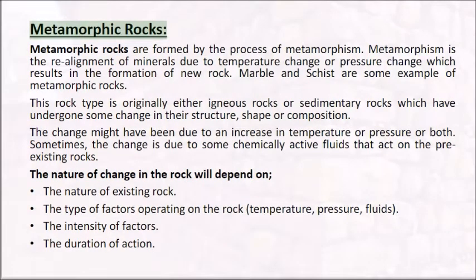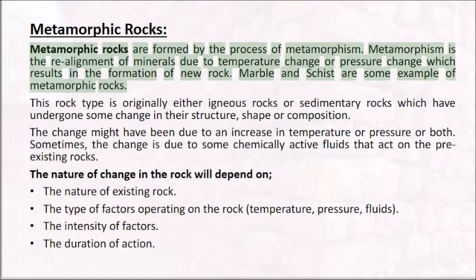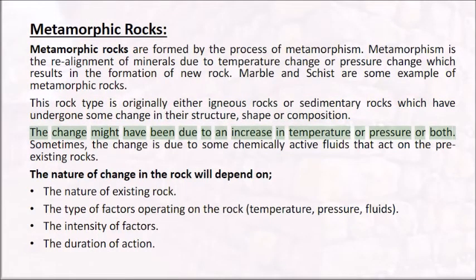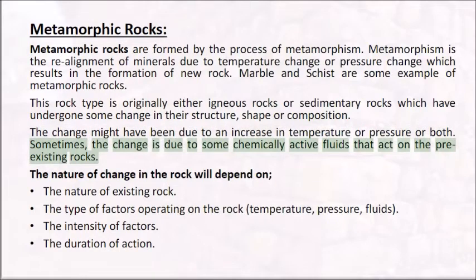Metamorphic rocks are formed by the process of metamorphism. Metamorphism is the realignment of minerals due to temperature change or pressure change, which results in the formation of new rock. Marble and schist are some examples of metamorphic rocks. This rock type is originally either igneous or sedimentary rock which has undergone some change in structure, shape, or composition. The change might have been due to an increase in temperature or pressure or both. Sometimes the change is due to some chemically active fluids acting on pre-existing rocks.